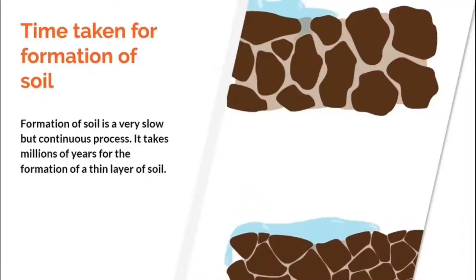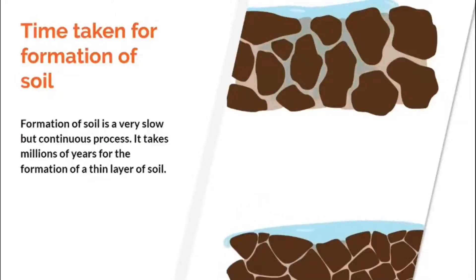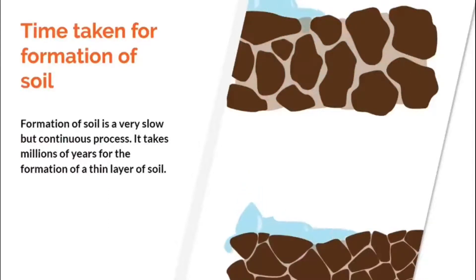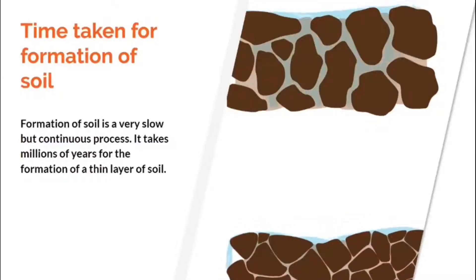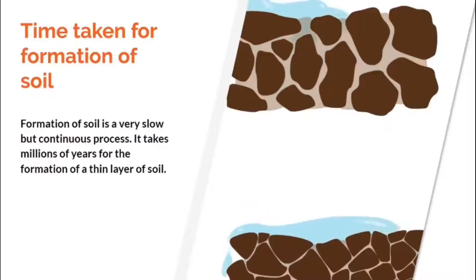The time taken for soil formation is very slow, but it is a continuous process — it takes millions of years just to form a thin layer of soil. During the day, rocks heat up, and at night when the temperature decreases, these rocks cool down. This action of heating and cooling brings cracks in the rocks, and when rain occurs, rainwater enters these cracks, making the rocks weaker until they break down into pieces.